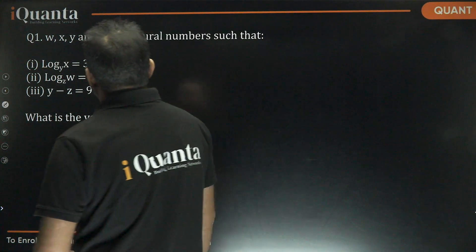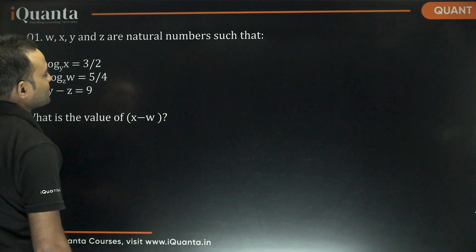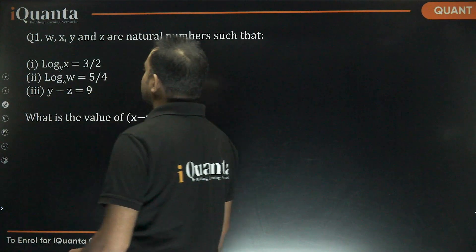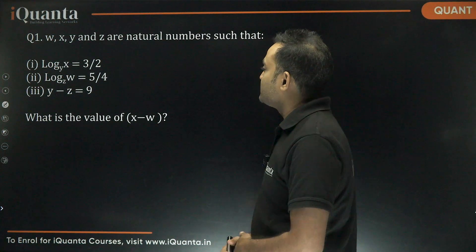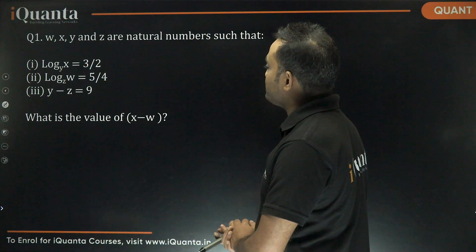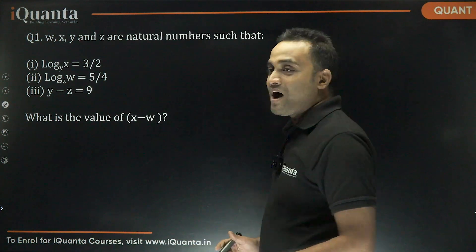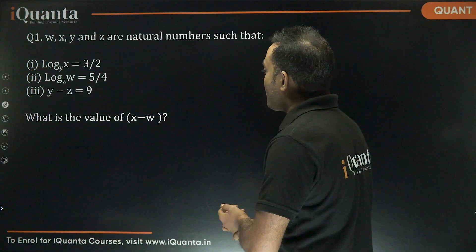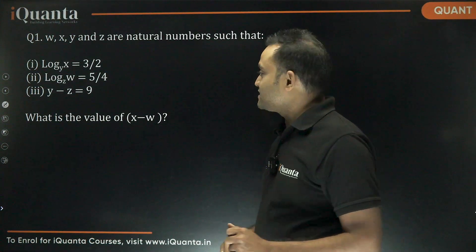Y, X, X, Y, Z, W are natural numbers such that log X to the base Y is equal to 3 by 2, log W to the base Z is equal to 5 by 4, and Y minus Z is equal to 9. What is the value of X minus W?